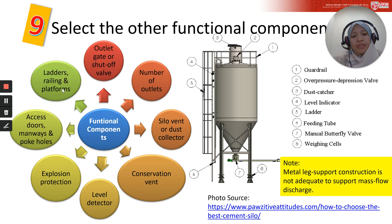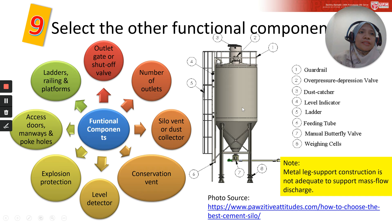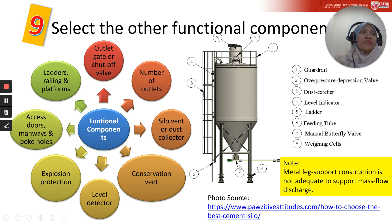Eighth, ladder and railing platforms — this depends on whether workers need access to the top roof of the silo. This illustration shows a cement silo with a ladder, railing, dust catcher, overpressure/depression valve as a conservation vent, and an outlet gate using a manual butterfly valve.